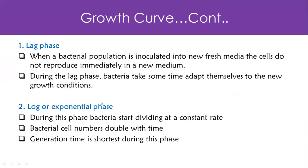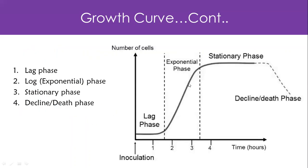Then we have the log phase, or exponential phase. This phase has a very high reproduction rate — the bacteria are dividing at a constant rate. The number of bacteria being produced far outweighs the number that are dying. That's why we have exponential growth. If you look at the graph, you can see an exponential rise in the number of bacterial cells.